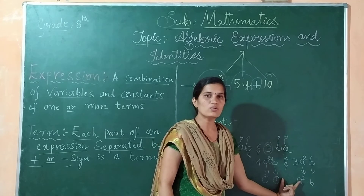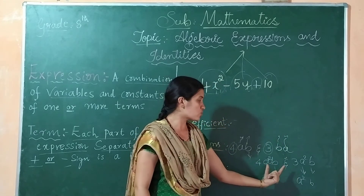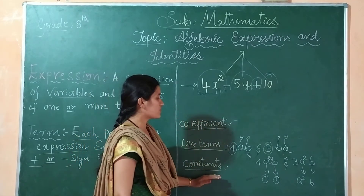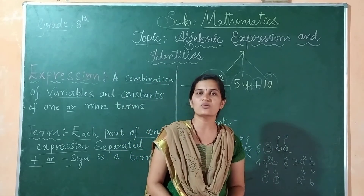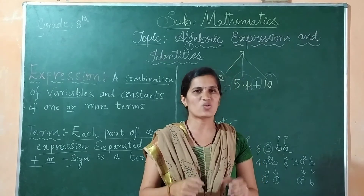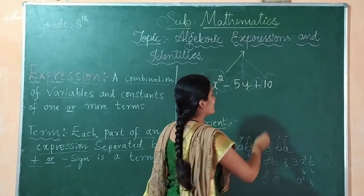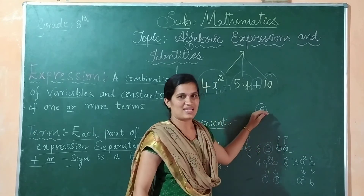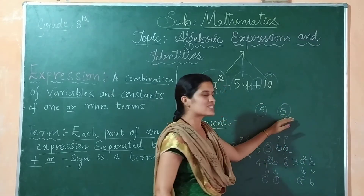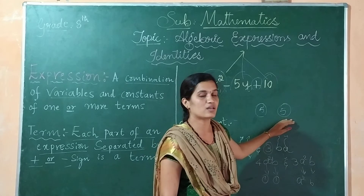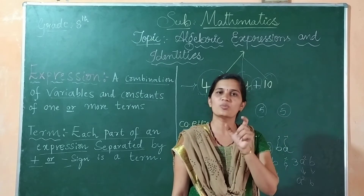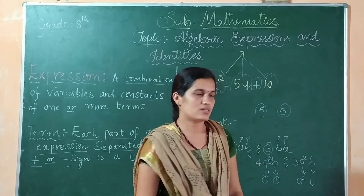I hope you understood what are like terms. Now, come to the constants. What are constants? Constants are nothing but numbers. They cannot be changed. If I write 1, then it is a constant — whenever I see this 1, it is exactly 1. So it is a constant — it can never be changed. Every number or numerical coefficient is called a constant.